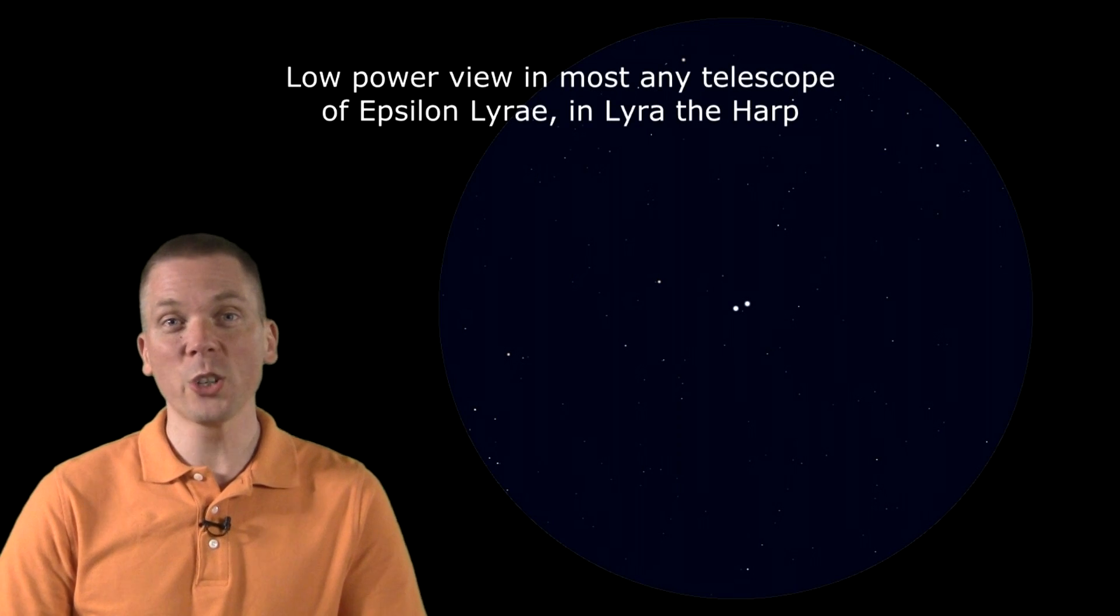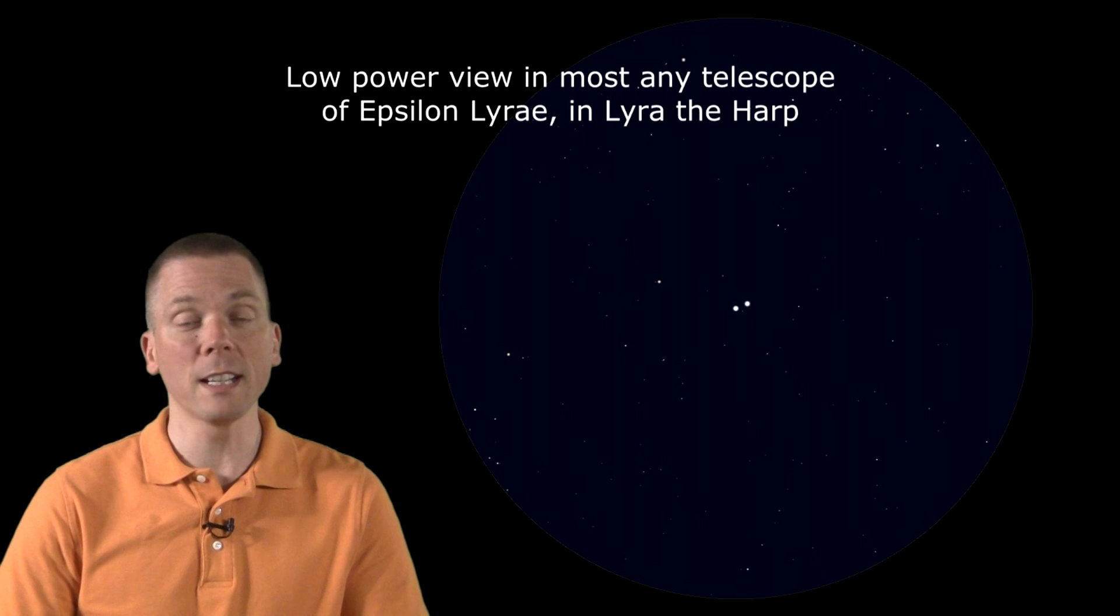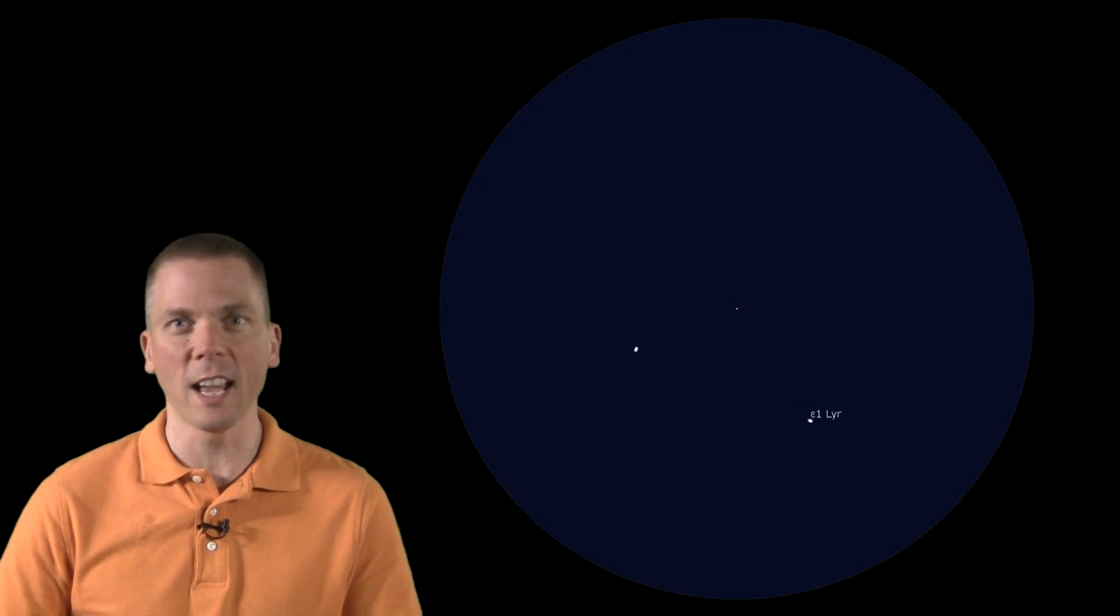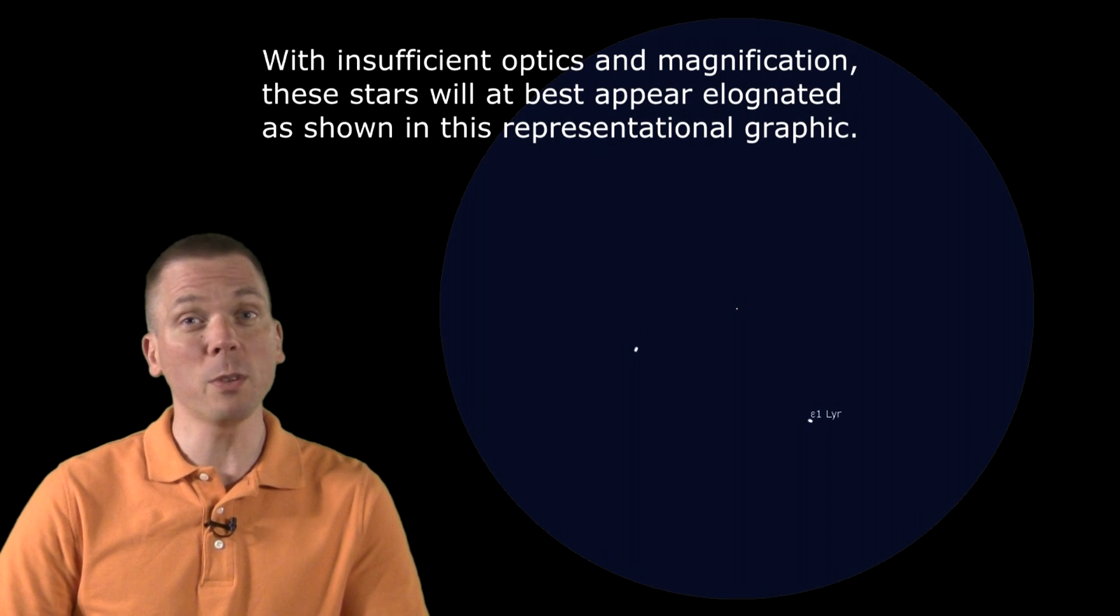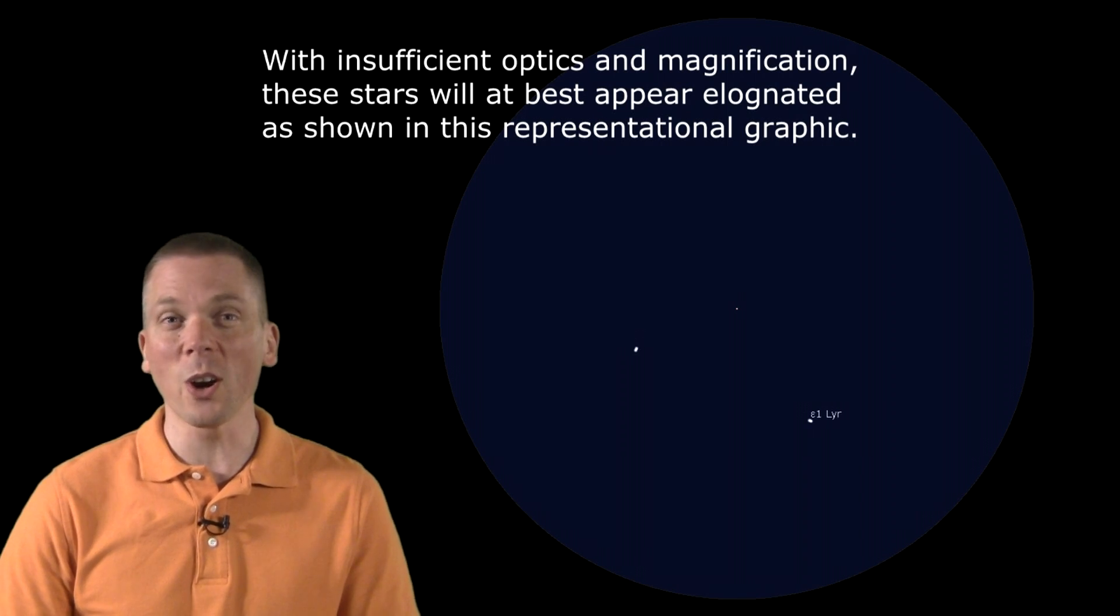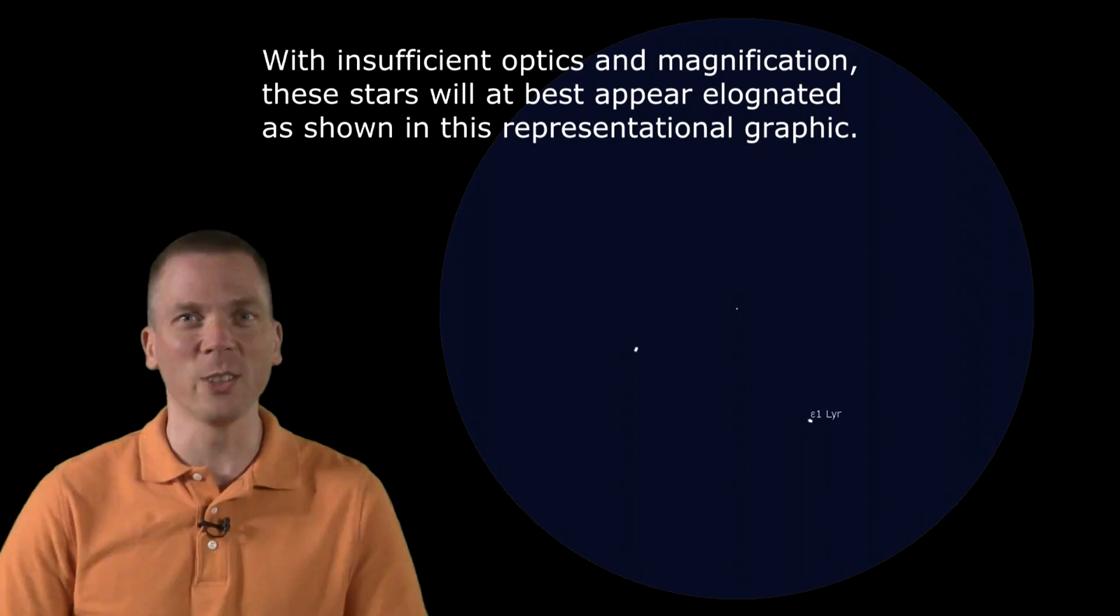This is where a larger aperture telescope, good optics, and a steady sky are required. Because not one, but both of those stars are each a double star themselves, though very close together. This is the famous double-double star, and it really is that easy to find, but splitting both stars takes those better optics and good skies.